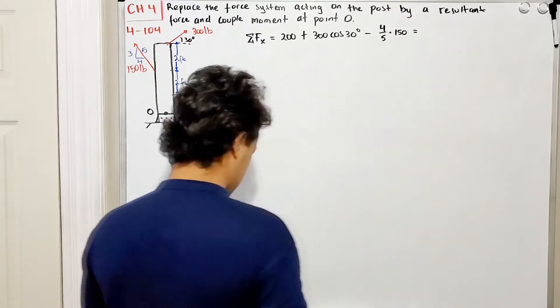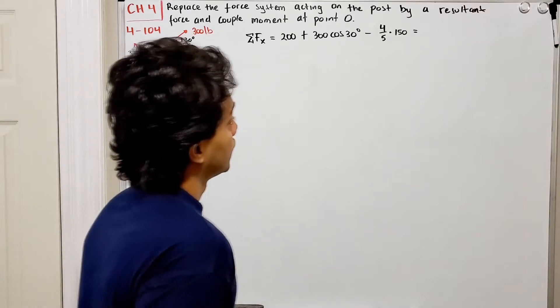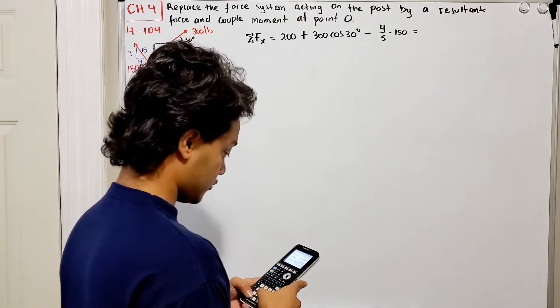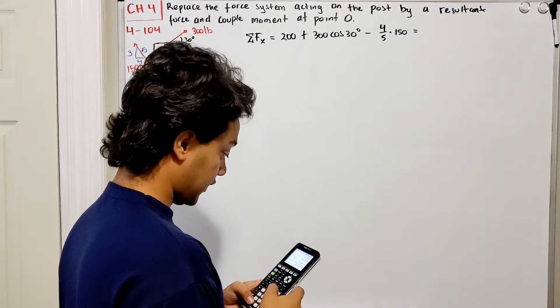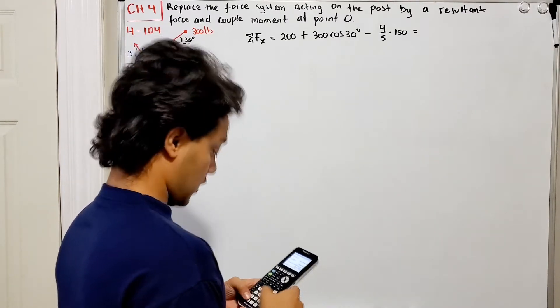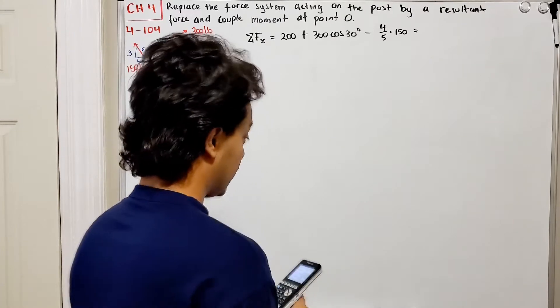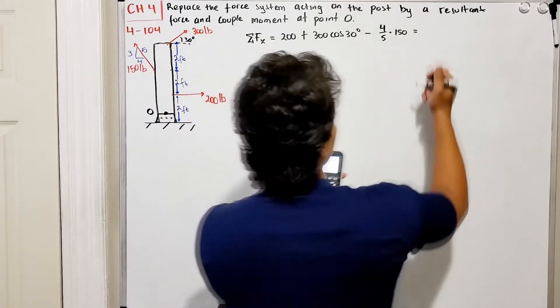Let's check this out. I have 200 plus 300 cosine of 30 degrees minus four-fifths multiplied by 150, and this gives me 340 pounds.